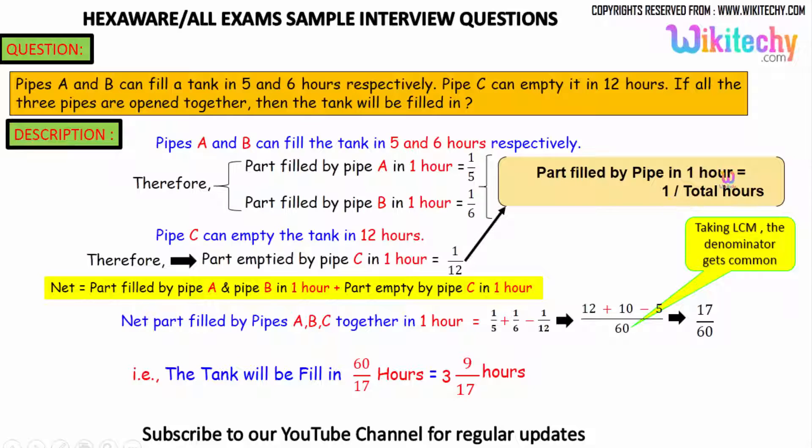The part filled by pipe in 1 hour is equal to 1 divided by the total hours. Pipe C can empty the entire tank in 12 hours. The part emptied by pipe C in 1 hour is equal to 1 divided by 12.